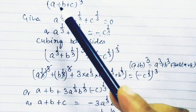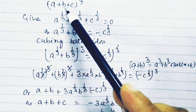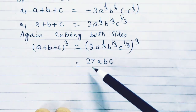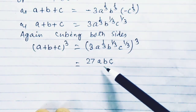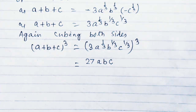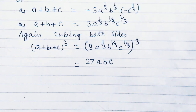So a plus b plus c whole cube equals 27abc. For these type of videos, please subscribe and share the channel. Thank you.